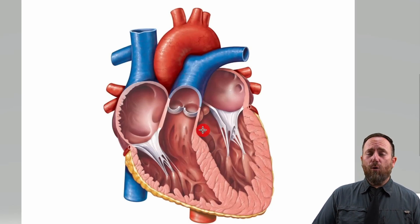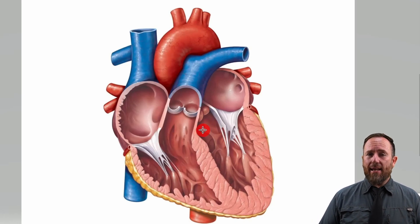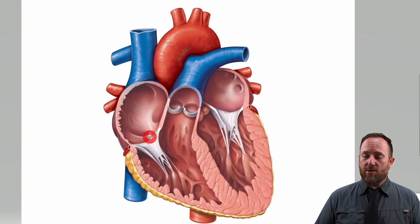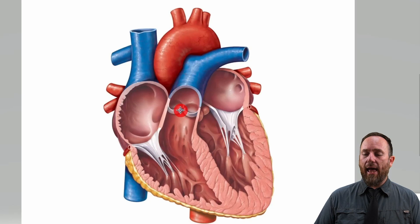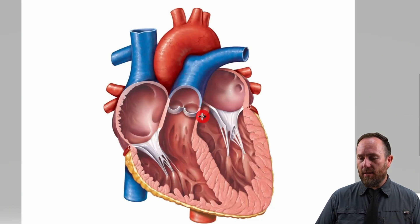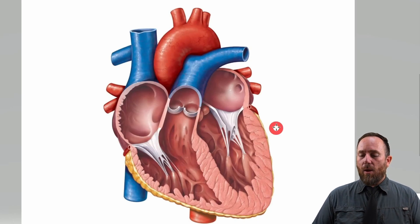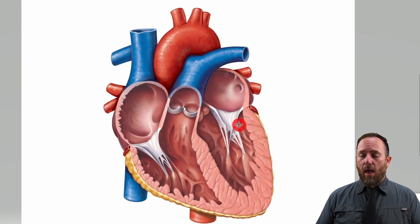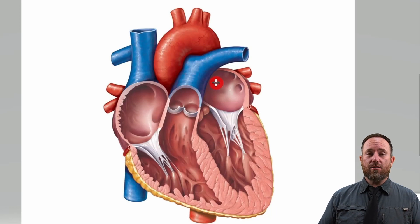There are four valves found in the heart. A valve is a one-way door and it helps prevent blood from flowing back. There's a valve between the atrium and the ventricle on both sides, and then there are valves between the ventricle and the arteries leaving it. So it's responsible for controlling the blood flow from the atria into the ventricle — it should close as soon as the atria relaxes.